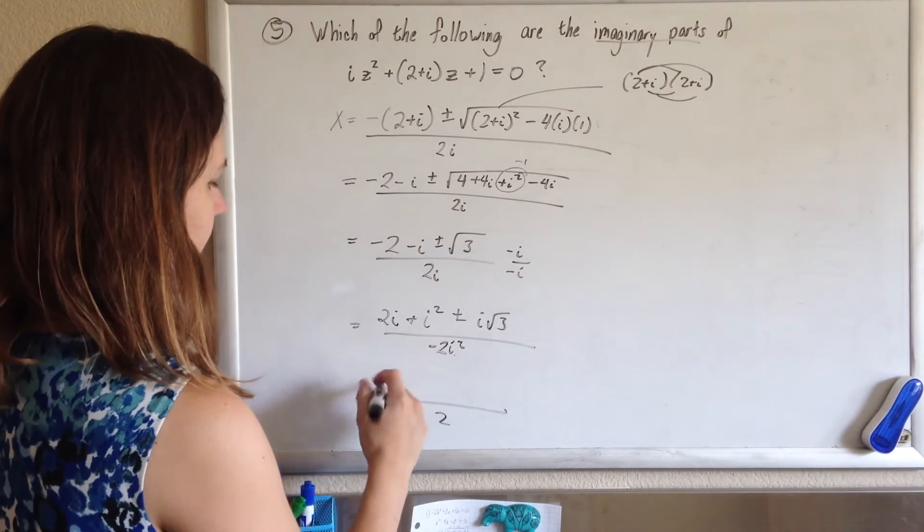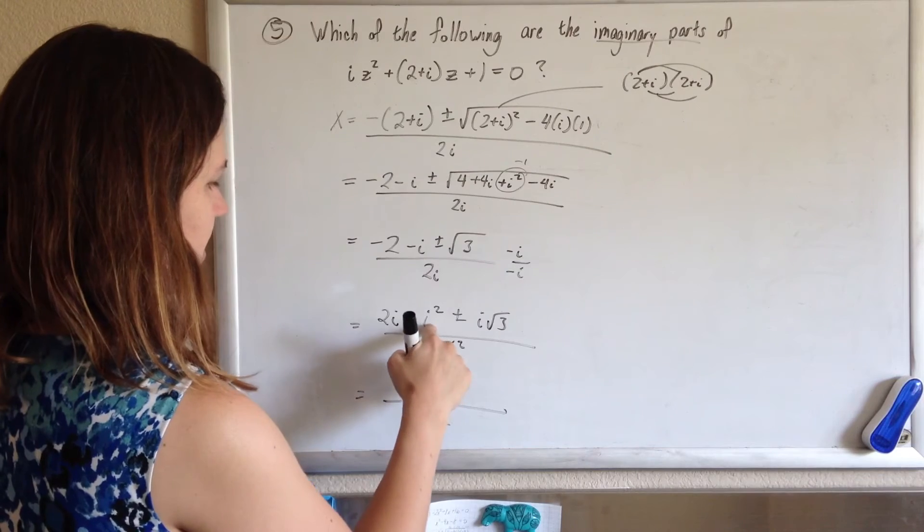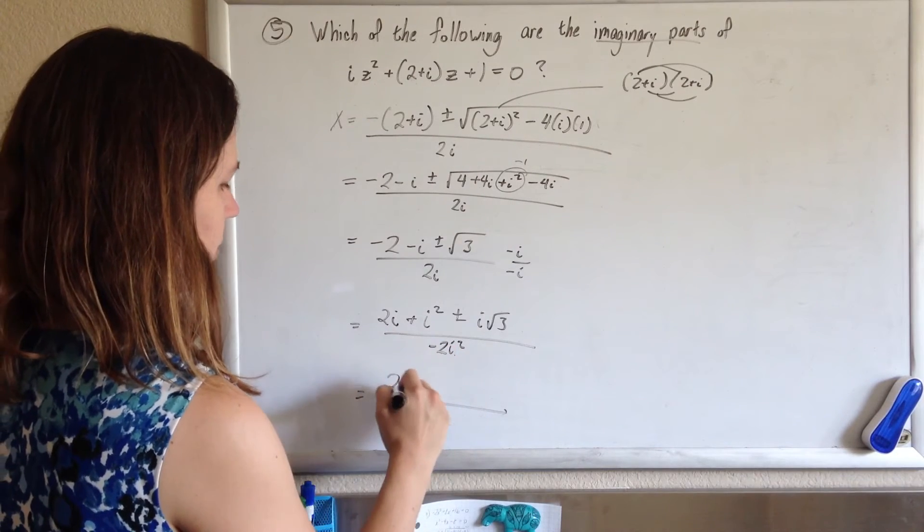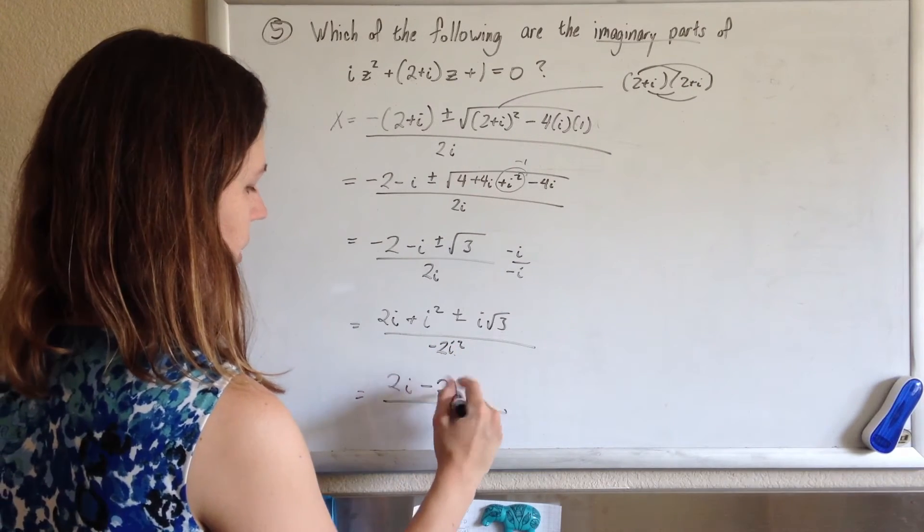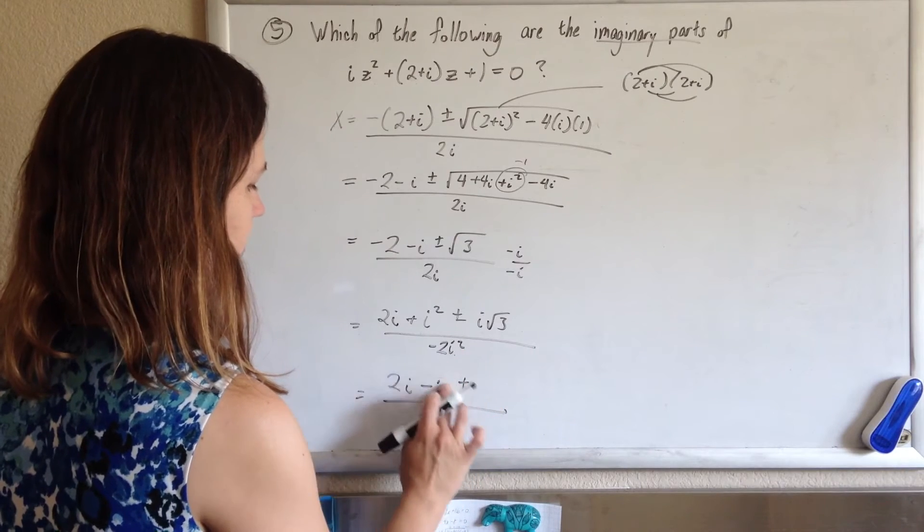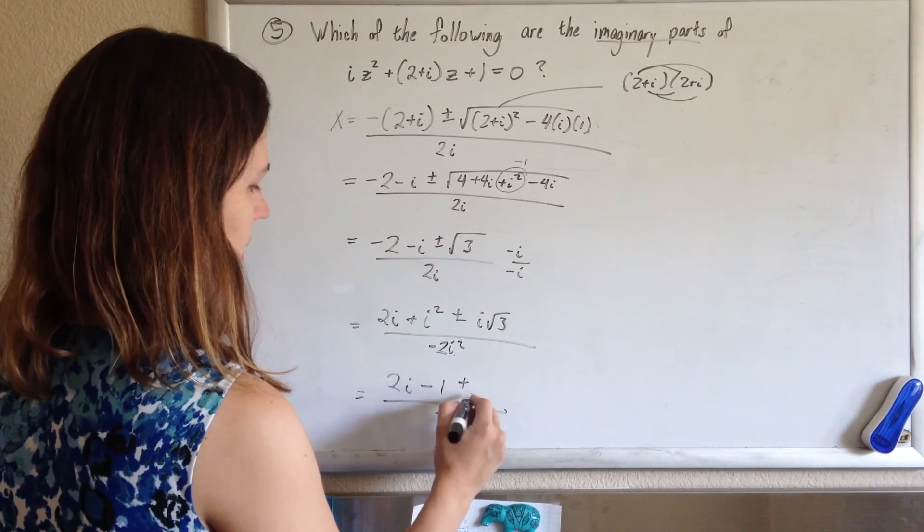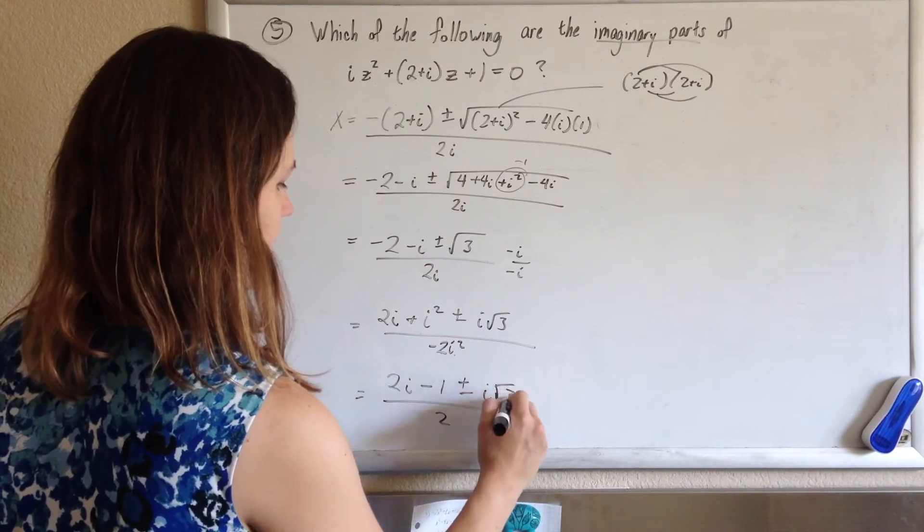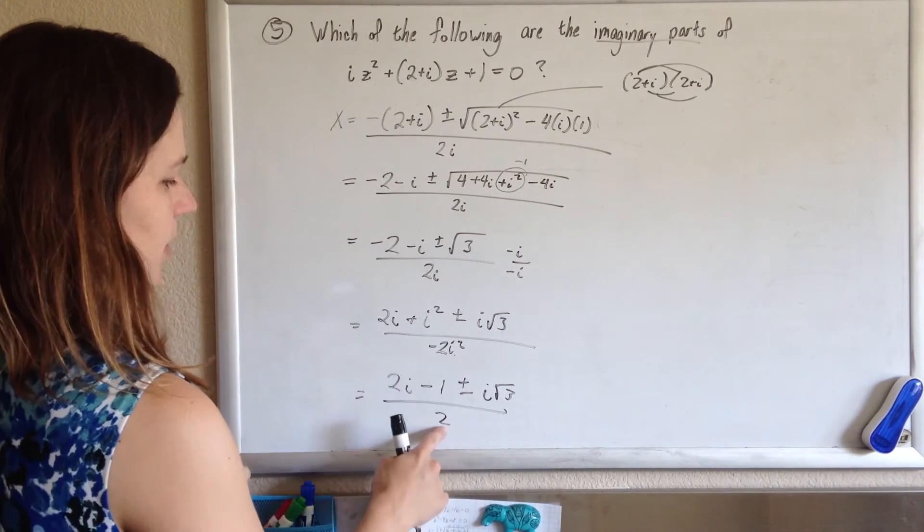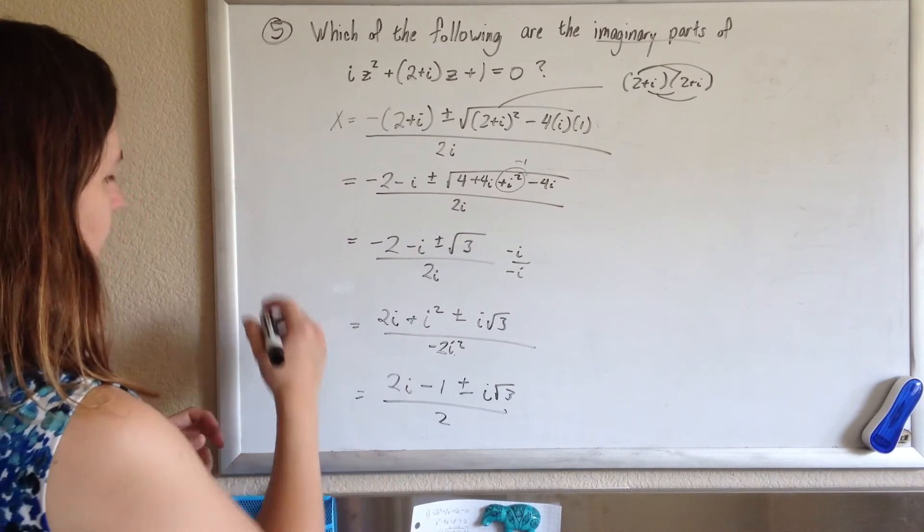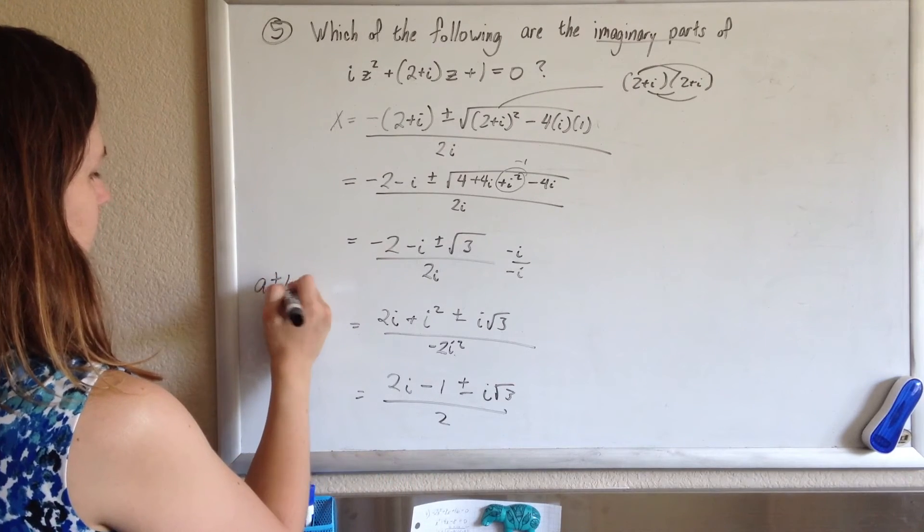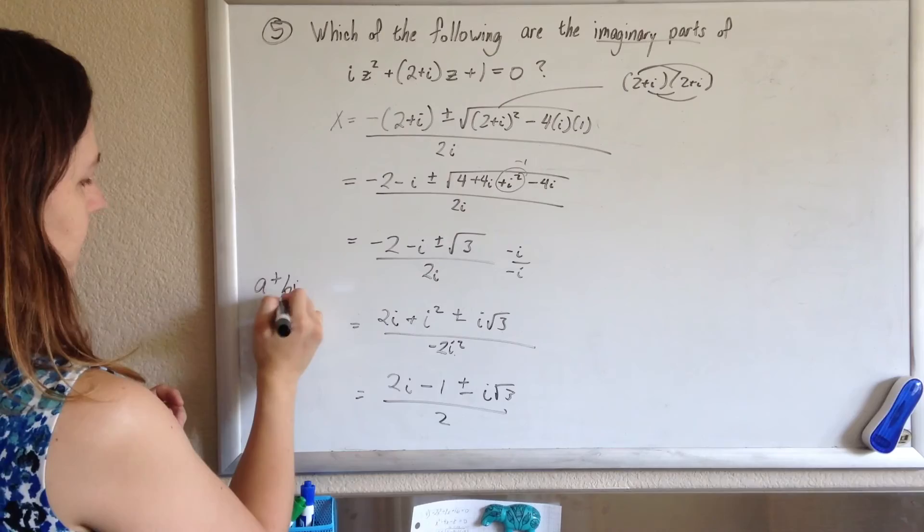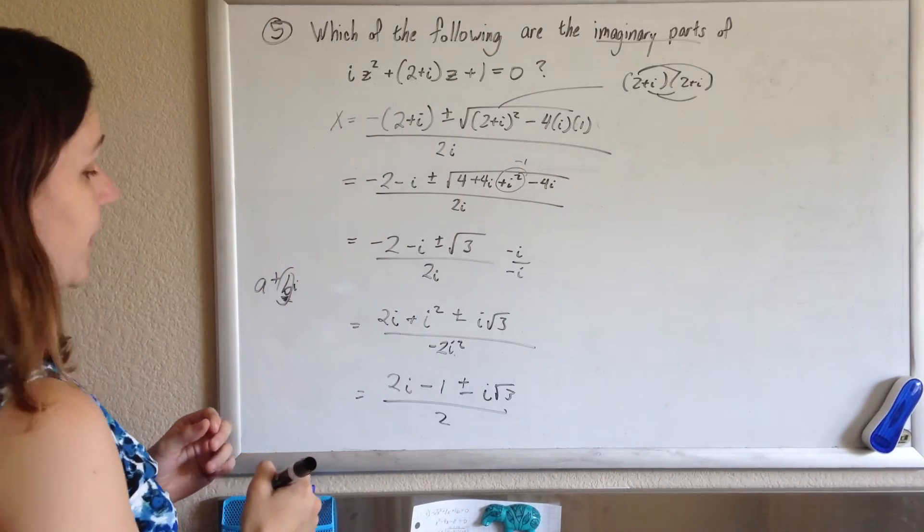So here you get, changing our i squared to negative 1, you get 2i minus 1, plus or minus i rad 3, and remember, we said the bottom negative 2 times negative 1 is 2. So we're going to write this in its standard form, a plus bi, and the b is the imaginary part there.